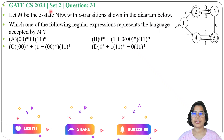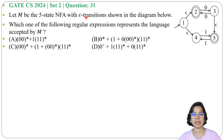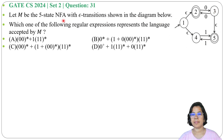Let's solve one previous question on regular language. This question was asked in GATE year 2024, set 2, question number 31. Let M be the 5-state NFA with epsilon transitions shown in the diagram below. Which one of the following regular expressions represents the language accepted by M?